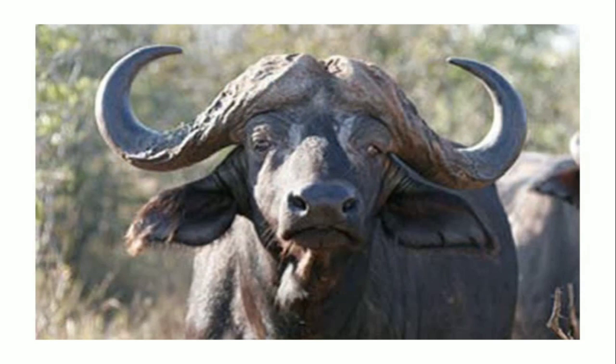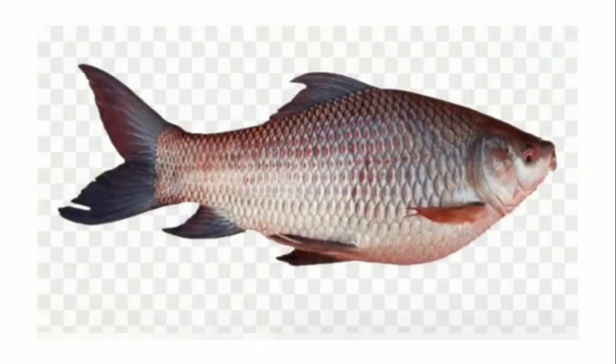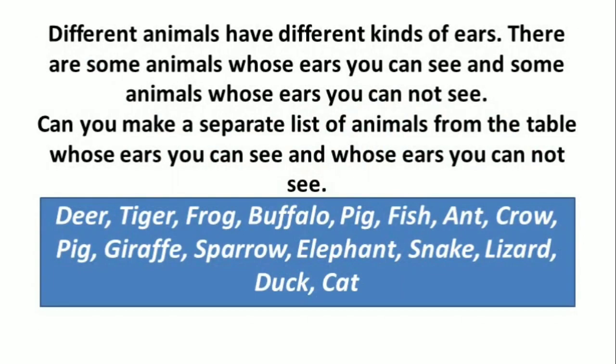See a frog — we cannot see the ears of a frog. Tiger — we can see the ears of a tiger. Buffalo's ears we can see because they are quite big in size. Fish's ears we cannot see because they are extremely small in size.